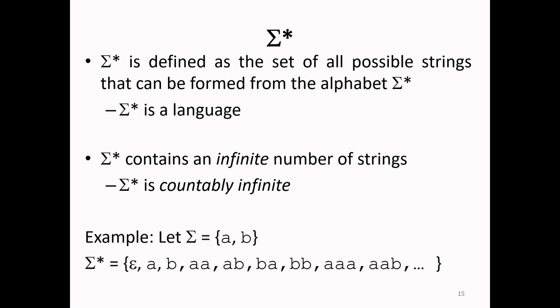For example, let us consider the same alphabet {a, b}. Then, the possible strings in Σ* are ε, a, b, aa, ab, ba, bb, aab, aba, and so on. Hence, this language is countably infinite.